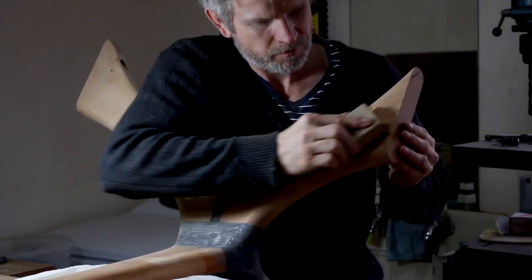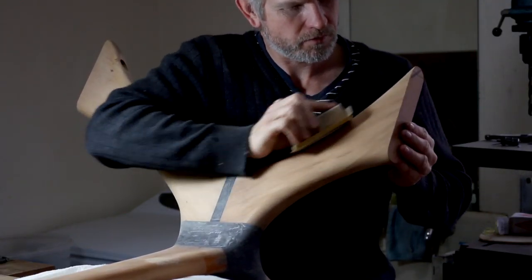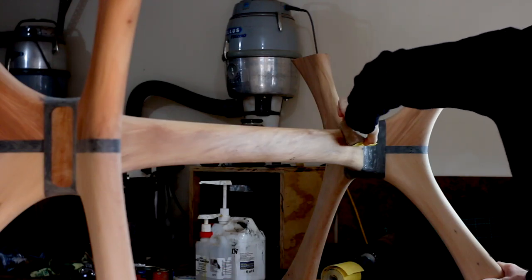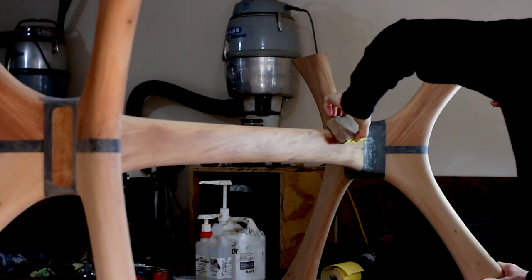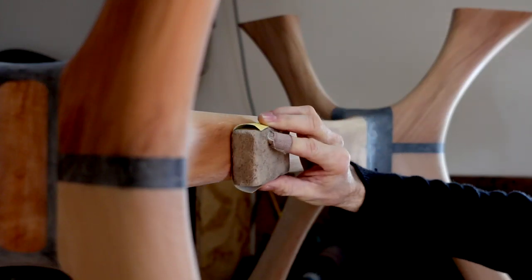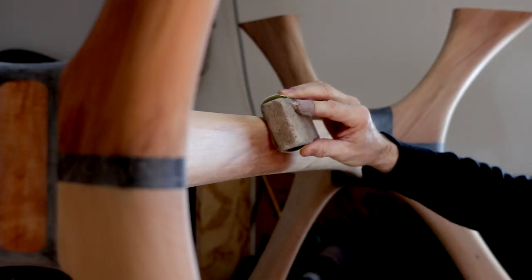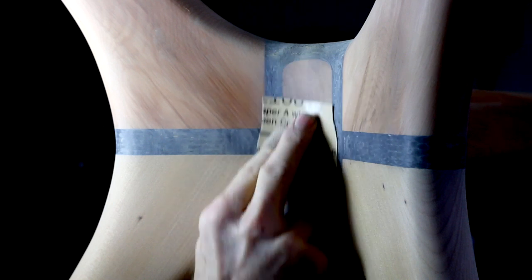Initially, I used 80 grit sandpaper and then 120 and then I finished it off with 220 grit. I didn't go any finer than 220 grit because I want the first coat of shellac to be the seal coat. And if you go any finer than 220 grit, it doesn't really soak in that well.